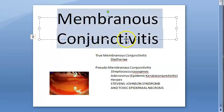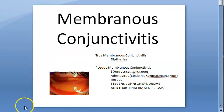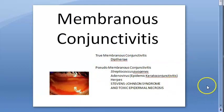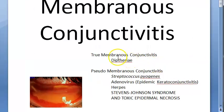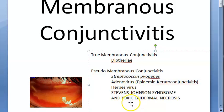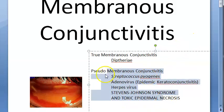In this video, let us look at membranous conjunctivitis. Membranous conjunctivitis means there is some membrane forming on the conjunctiva. You can have two types: true membrane or pseudomembrane. True membrane is usually caused by Corynebacterium diphtheriae, while pseudomembrane can be caused by bacteria like Streptococcus pyogenes, adenovirus, herpes virus, Stevens-Johnson syndrome, or toxic epidermal necrolysis.